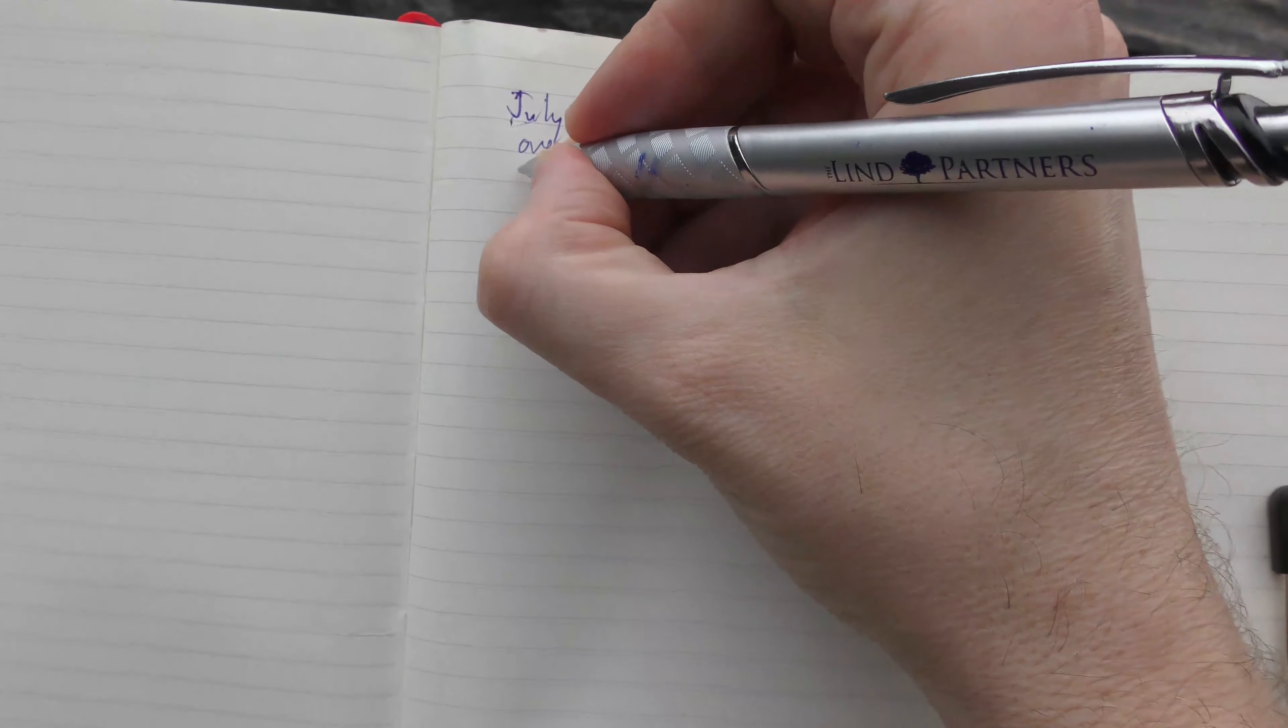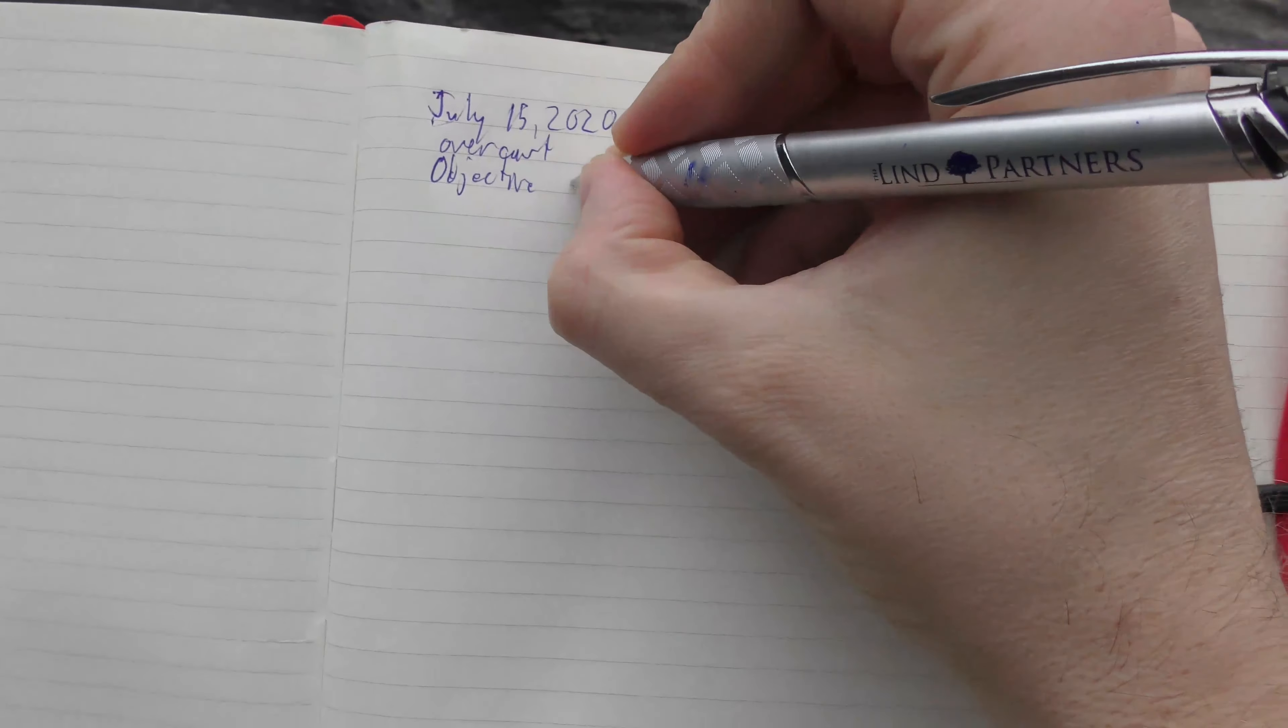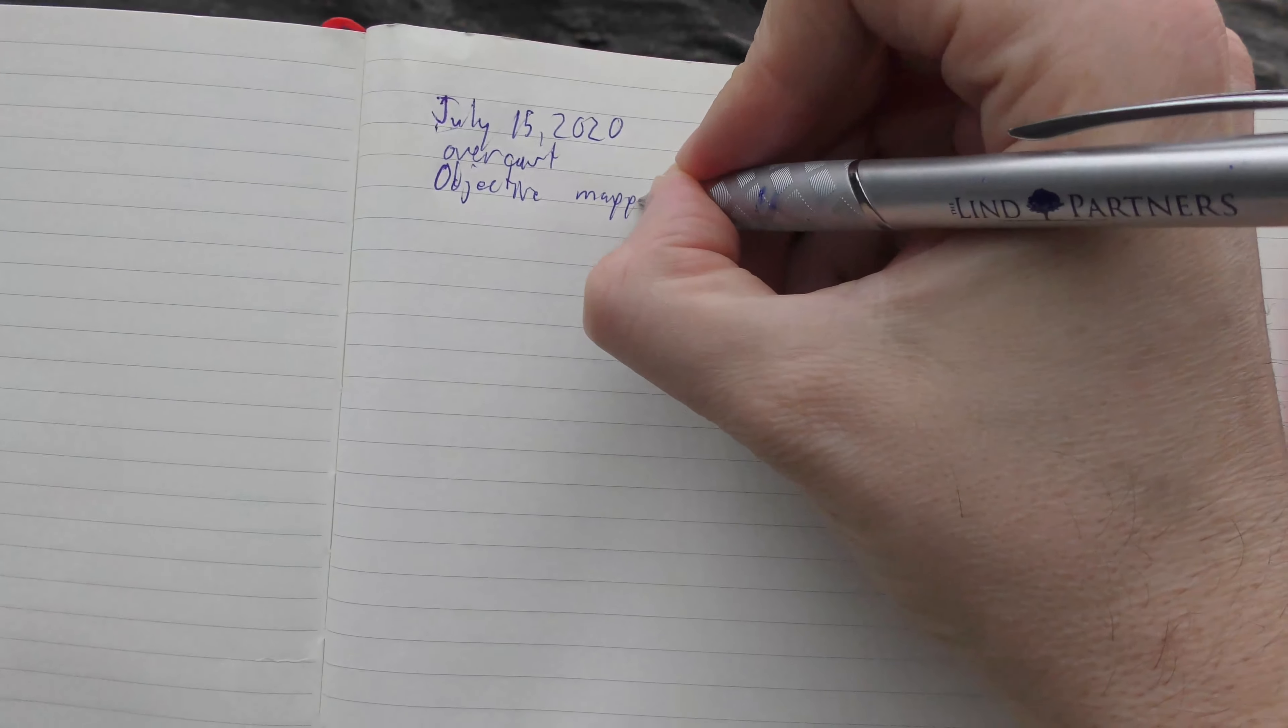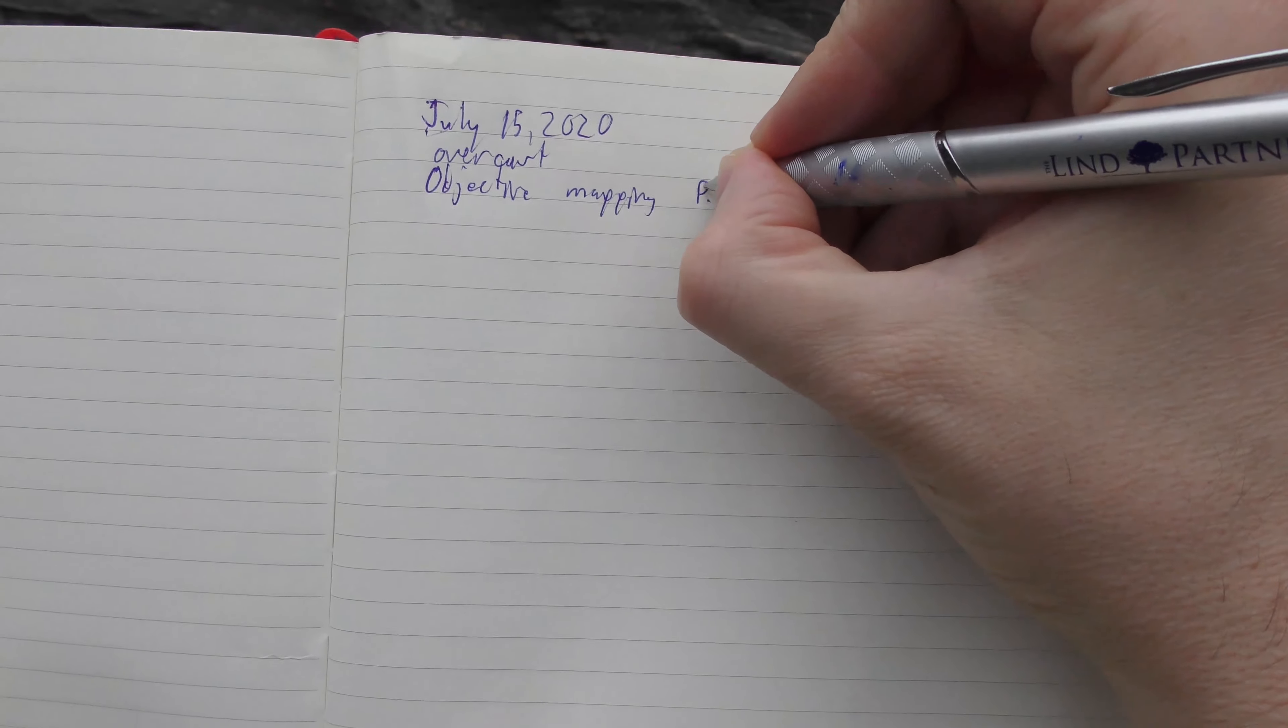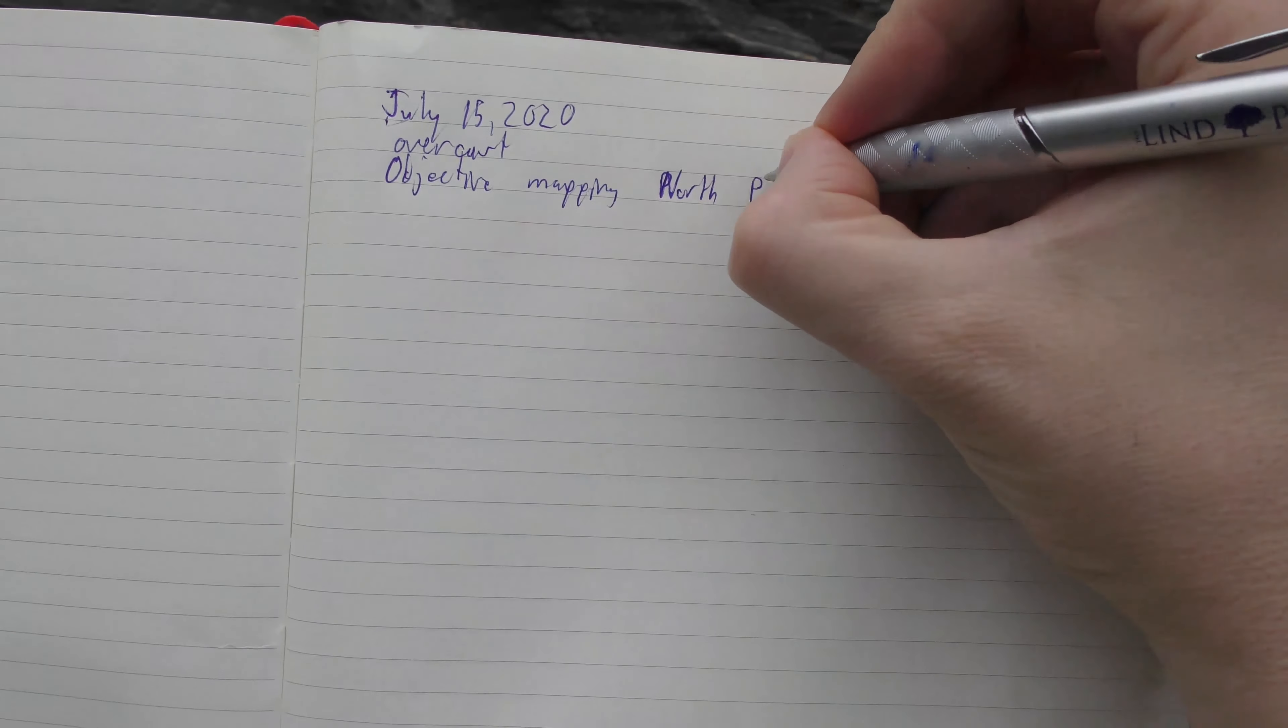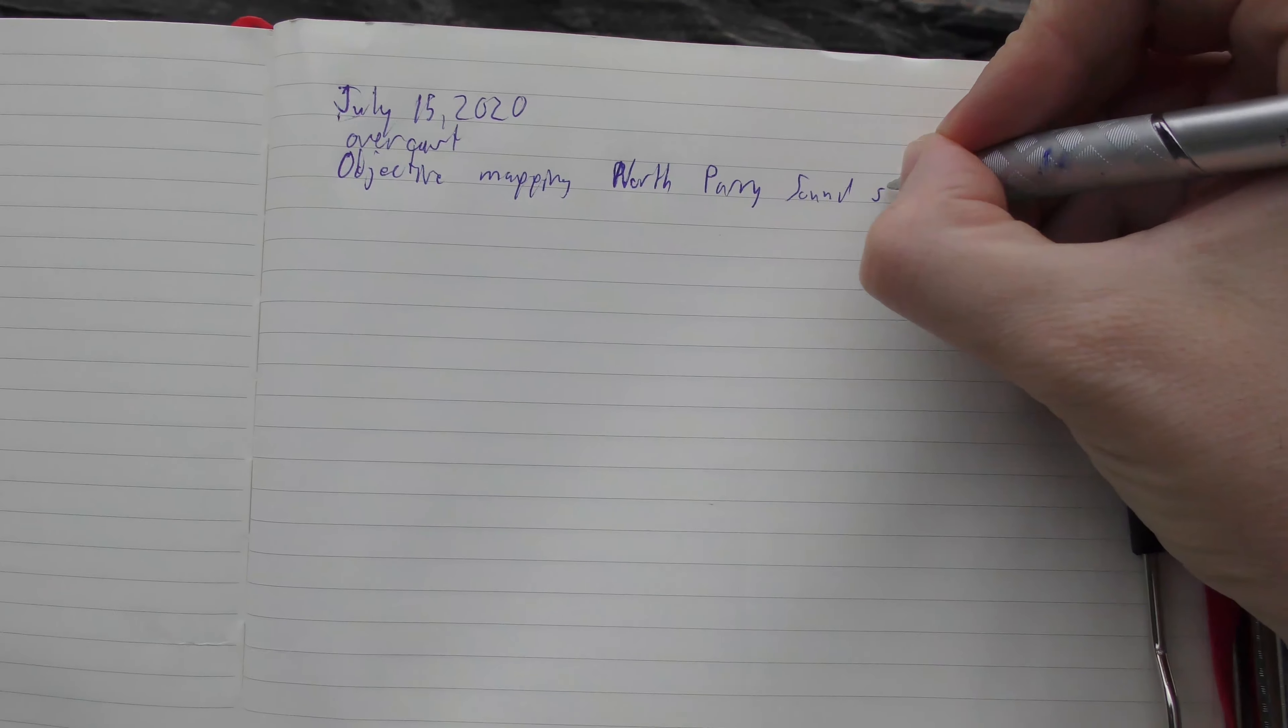So what we're going to be doing is, we got our objective. It's mapping the North Parry Sound shore trail.